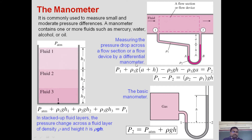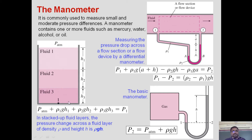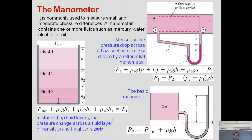Similarly, if a simple container has three different fluids filled — fluid 1, fluid 2, and fluid 3 — and someone asks for the total pressure at the bottom, I can say: total pressure at point 1 equals p_atmospheric plus pressure due to fluid 1 plus pressure due to fluid 2 plus pressure due to fluid 3. That is: p₁ = p_atm + ρ₁gh₁ + ρ₂gh₂ + ρ₃gh₃.